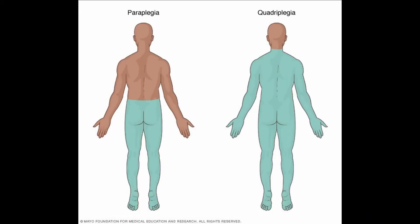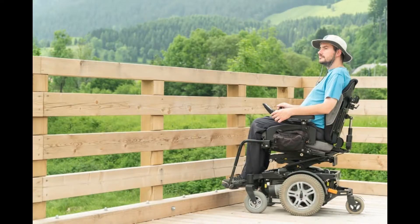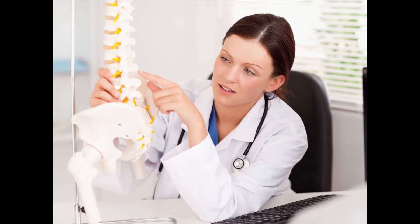To start off, what is quadriplegia? Quadriplegia is a condition in which the person affected has lost partially or totally control over his or her own limbs — so we're talking about legs and arms. Usually, people affected by quadriplegia cannot control their legs and have limited control over their arms, sometimes total loss of control, and it is often due to spinal cord injuries, for example during accidents.